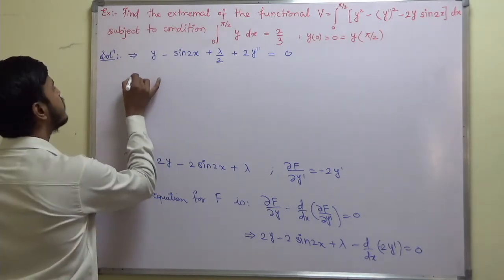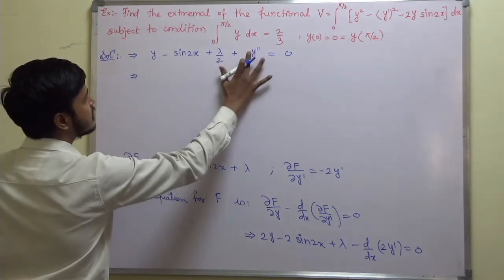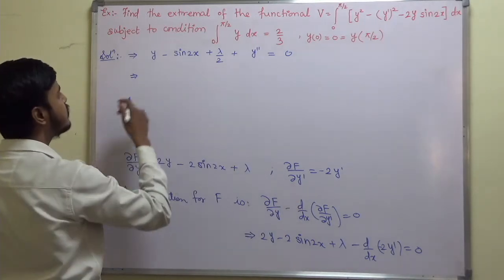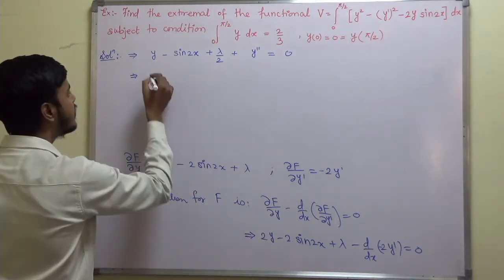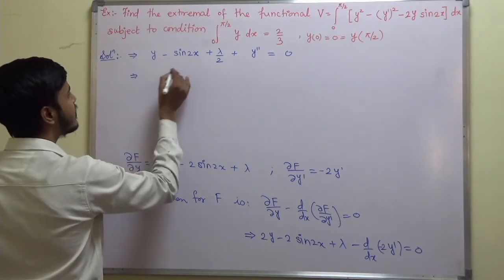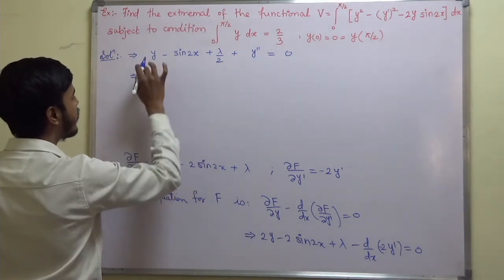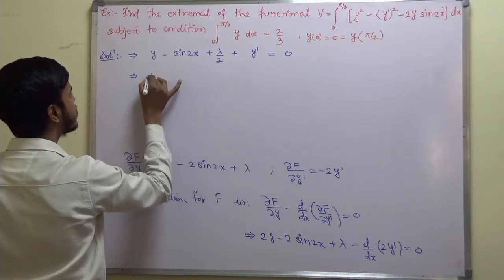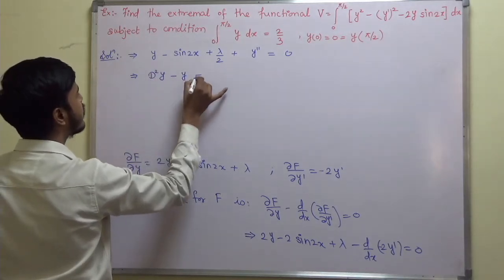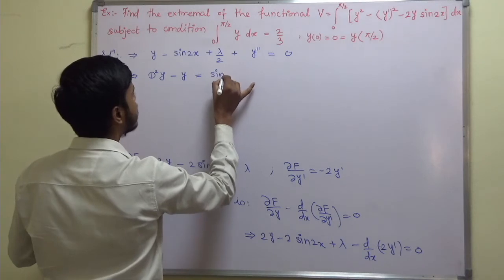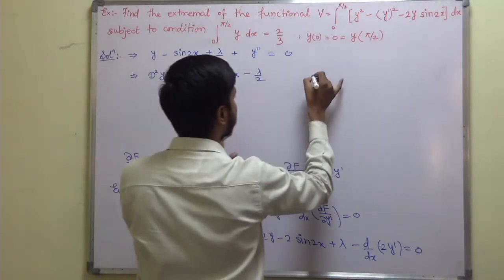Collecting like terms and taking y terms to one side, this becomes: y-double-dash minus y equals sin(2x) minus λ/2. Here d stands for derivative with respect to x. Call this equation 1.